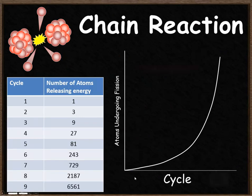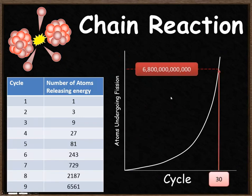By the time you get up to the 30th cycle you will have 6800 billion atoms taking part in your chain reaction. Each of these cycles takes a fraction of a second to be completed. So within less than a second you've got this number of atoms releasing energy.